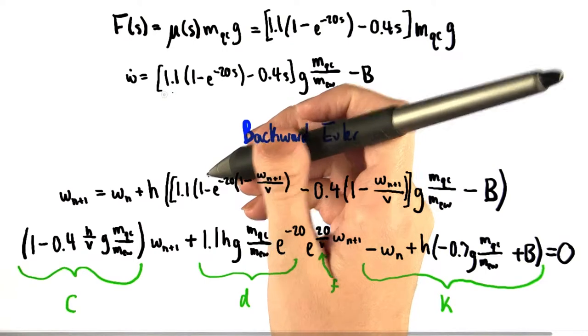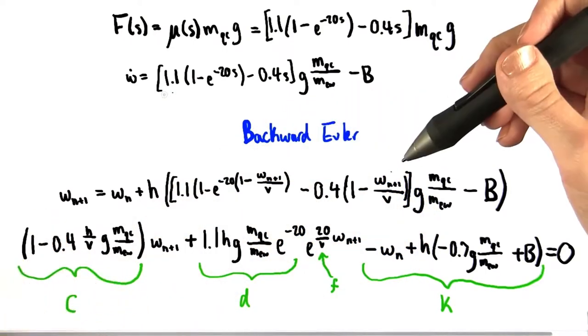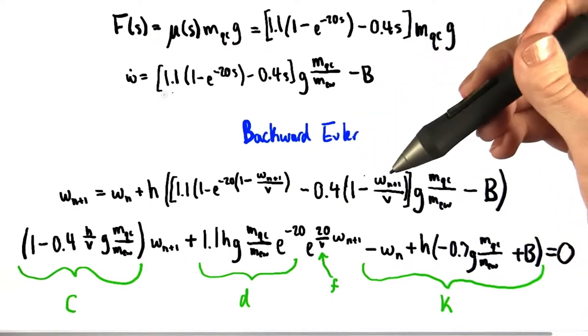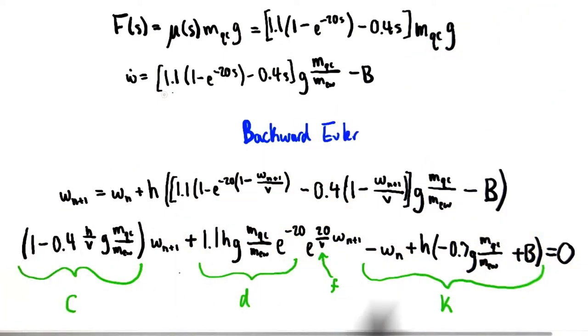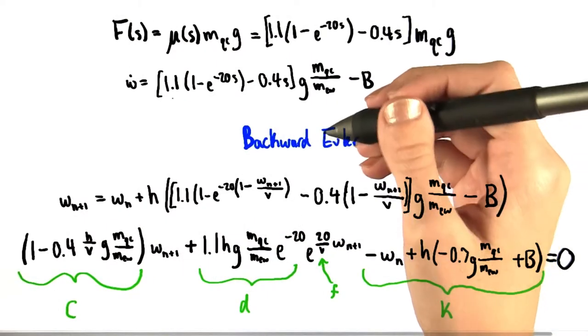Now with a little bit of rearranging, we can rewrite this equation for w at n+1 as this equation right here. Now it may seem slightly counterintuitive to rearrange things like this, since this expression looks maybe longer and more awkward than this one does.